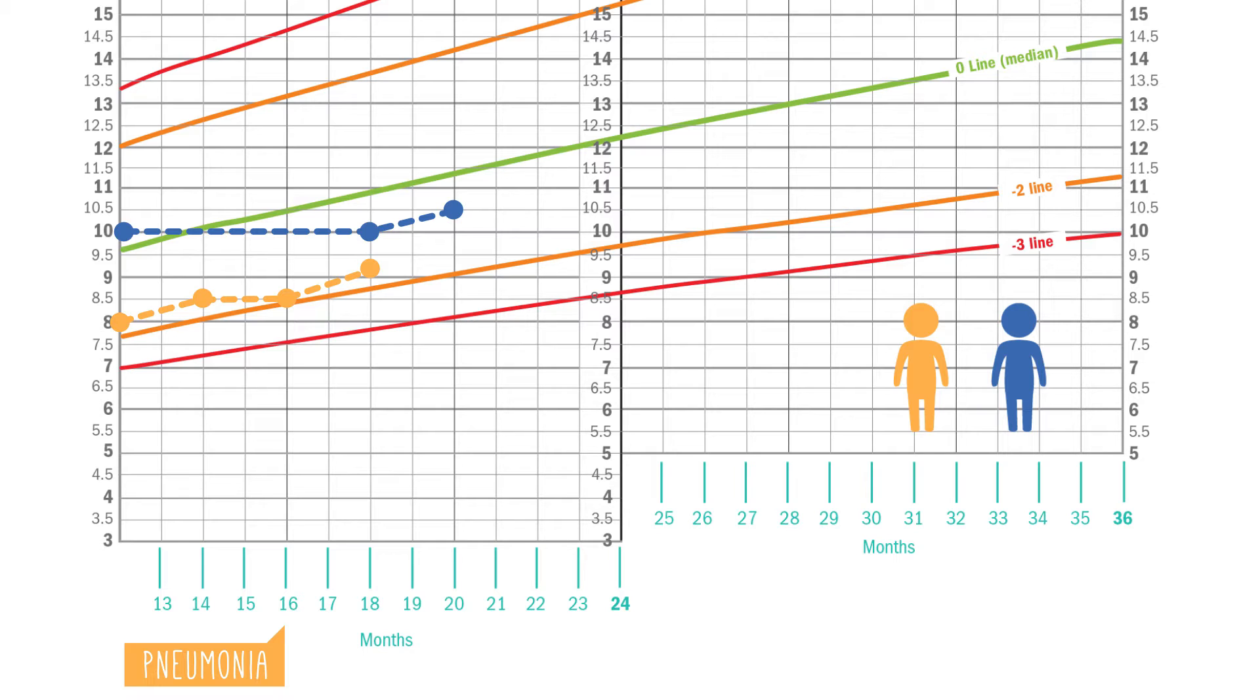Especially after about two years of age, when a healthy child's growth usually begins to follow one curve, crossing of lines can indicate a serious health problem. The orange child, on the other hand, may just be a constitutionally small child. Maybe his parents are smaller people, or there's some other reason that this is a small but healthy child.